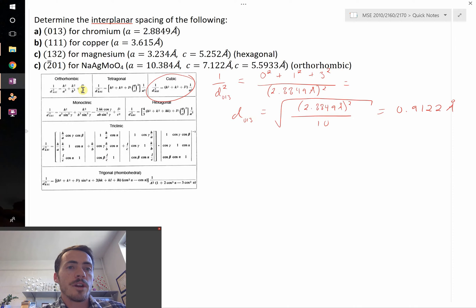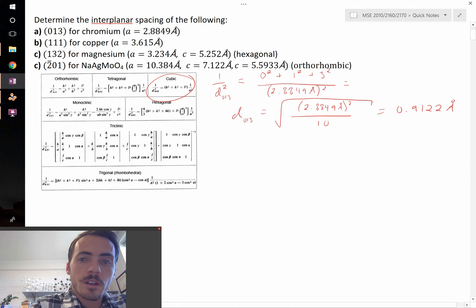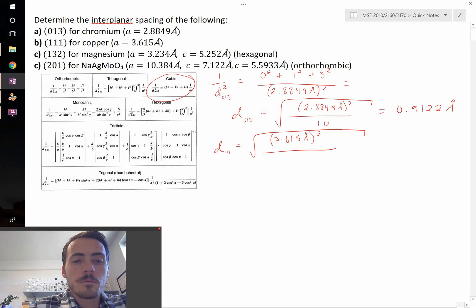Let's move on to copper. Copper is now the 1, 1, 1 plane, and we have a different lattice parameter, but it's still cubic. So it's the exact same approach. d for the 1, 1, 1 in copper is going to be equal to the square root of our lattice parameter squared, 3.615 angstroms squared, divided by 1 squared plus 1 squared plus 1 squared, which is just 3. I get that it equals 2.087 angstroms.